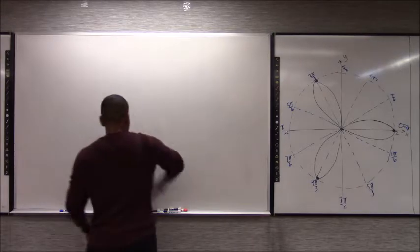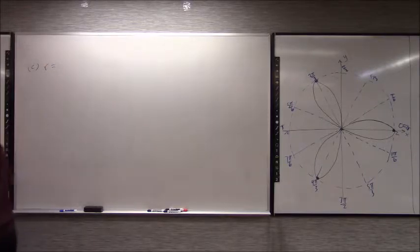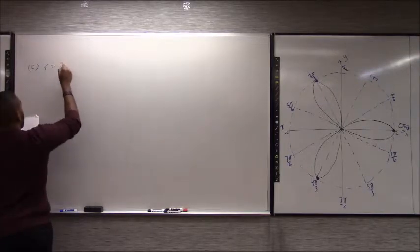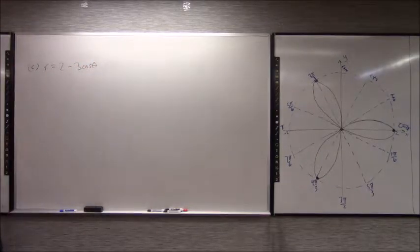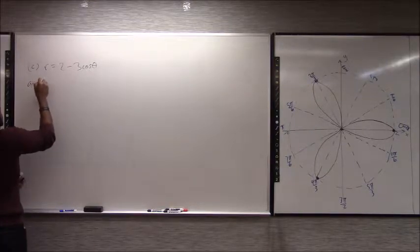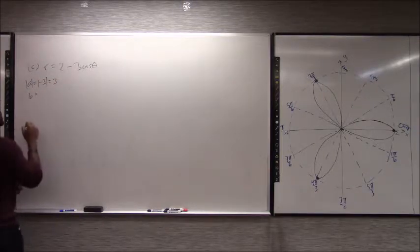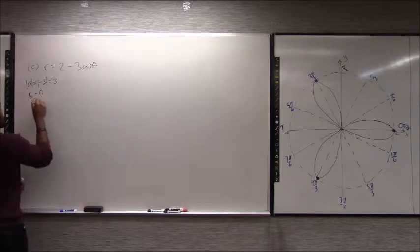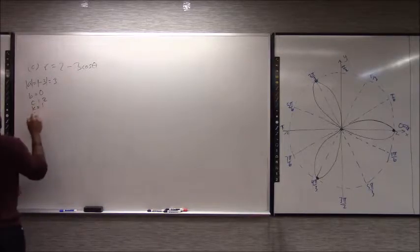We graphed B in class last time, so let's graph C: r = 2 − 3cos(θ). The variables: A would equal 3 (or negative 3 — we take the absolute value). B would equal 0, C would equal 2, and K would equal 1. So the period would equal 2π.